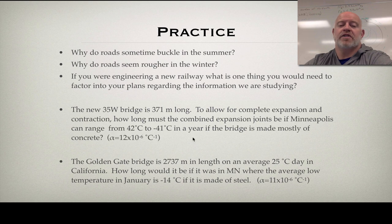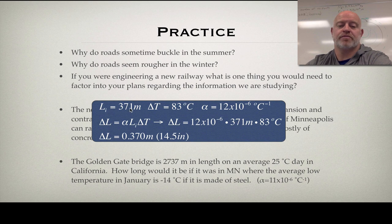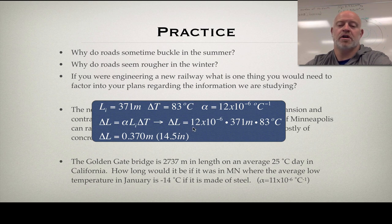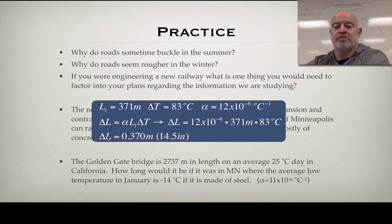For the 35W bridge, we have a temperature range from 42°C to negative 41°C. Our change in temperature is 83°C — that's 42 minus negative 41. Our coefficient of expansion for concrete was 12 × 10⁻⁶. Plugging into our equation — coefficient of expansion times original length times change in temperature — we find that bridge can shift 0.37 of a meter. That's theoretical but based on real data.